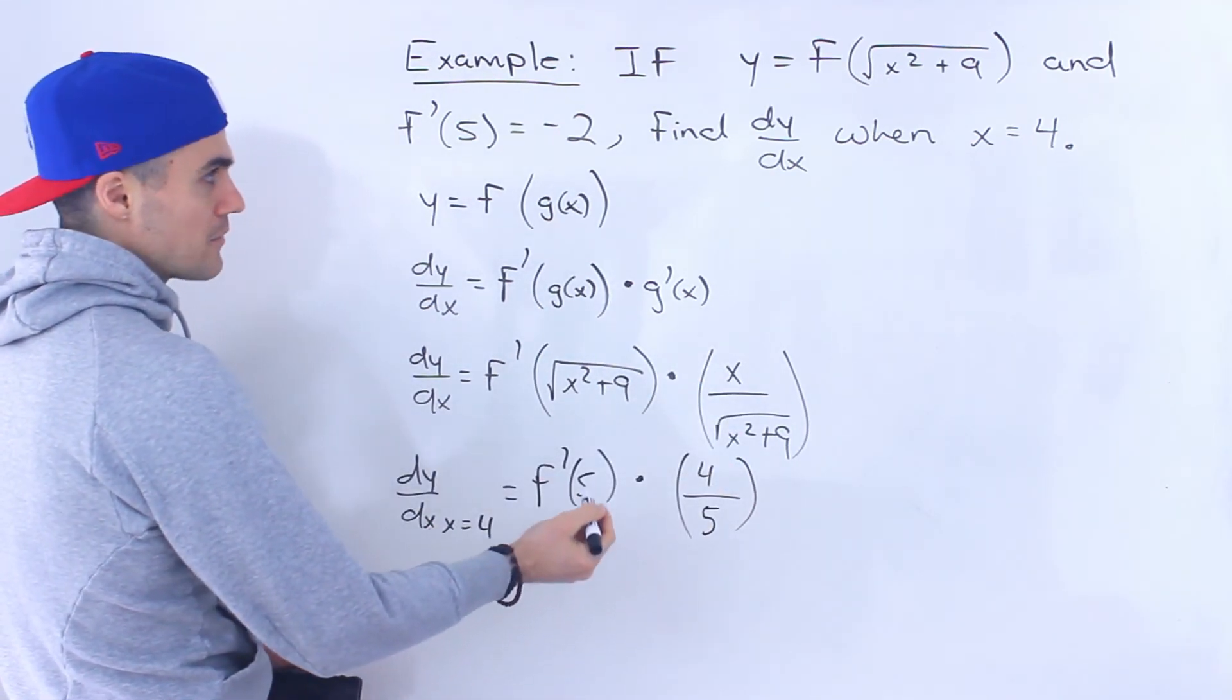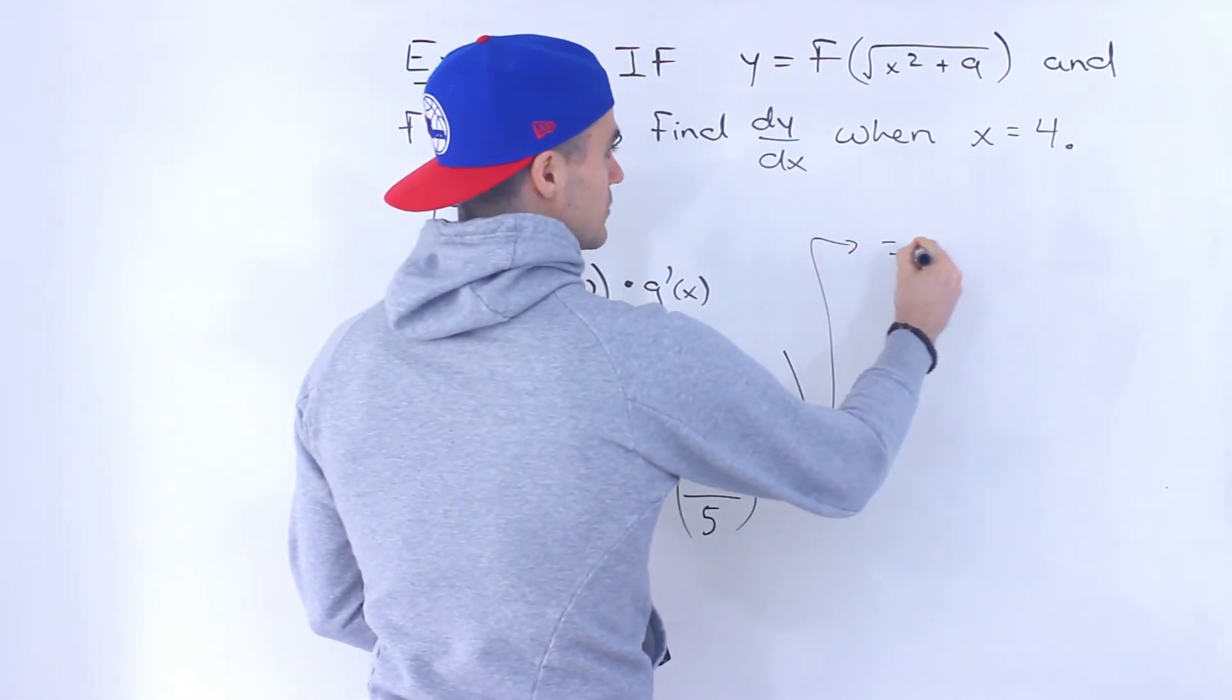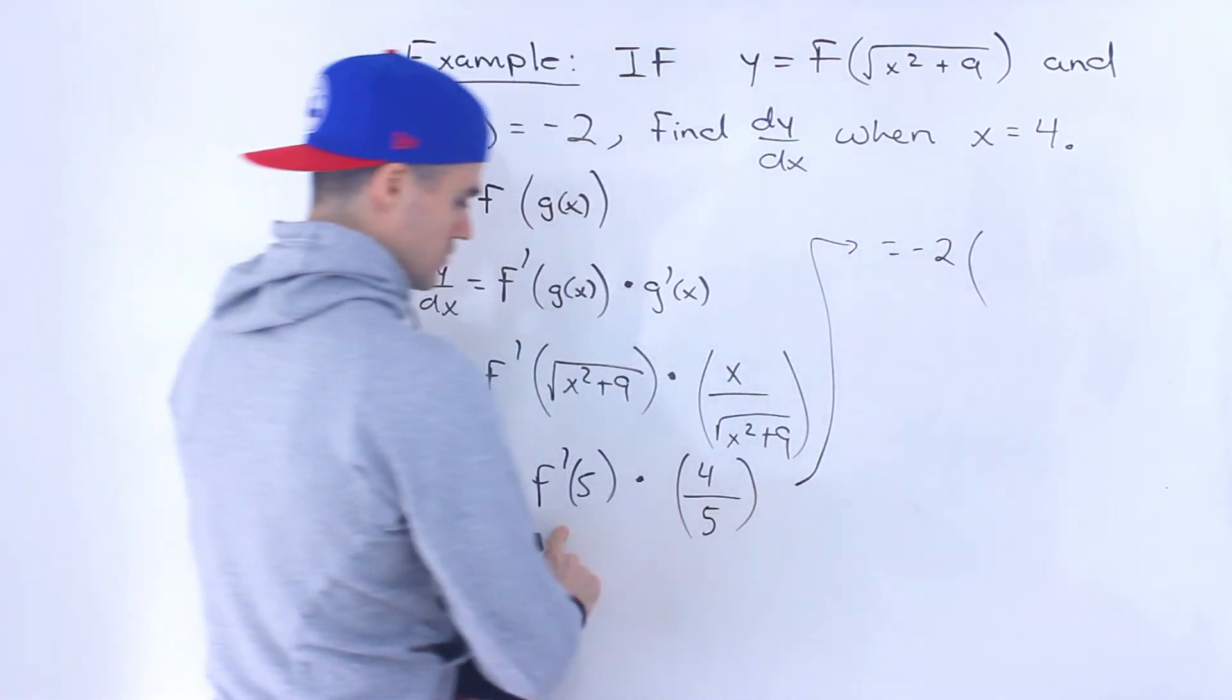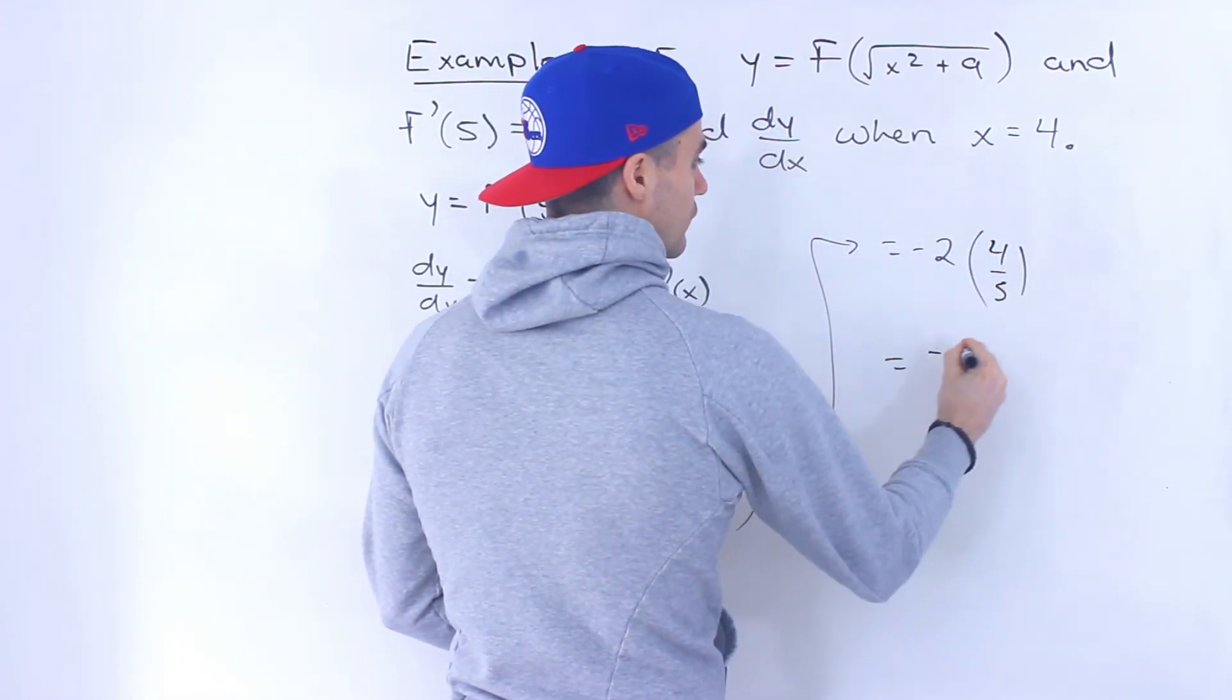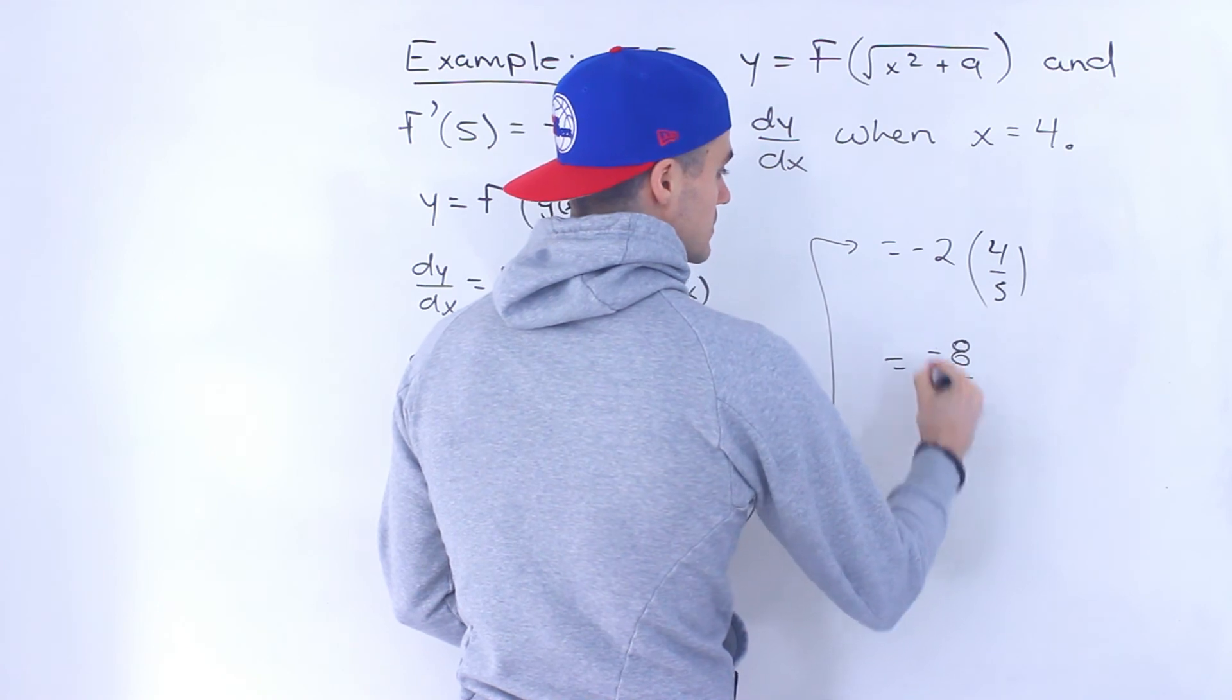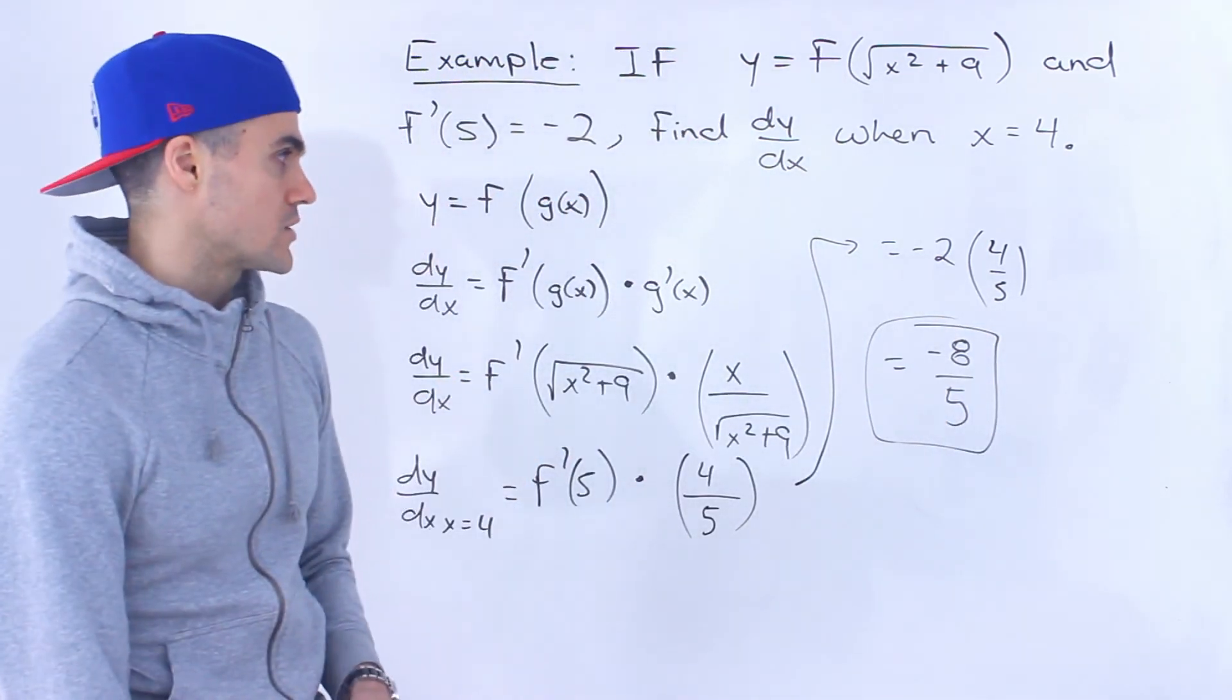And then notice that f prime of 5, what is that? Well, we're told that it's equal to negative 2 times that 4 over 5. And so our final answer ends up being negative 8 over 5. That's what the final answer is to this question.